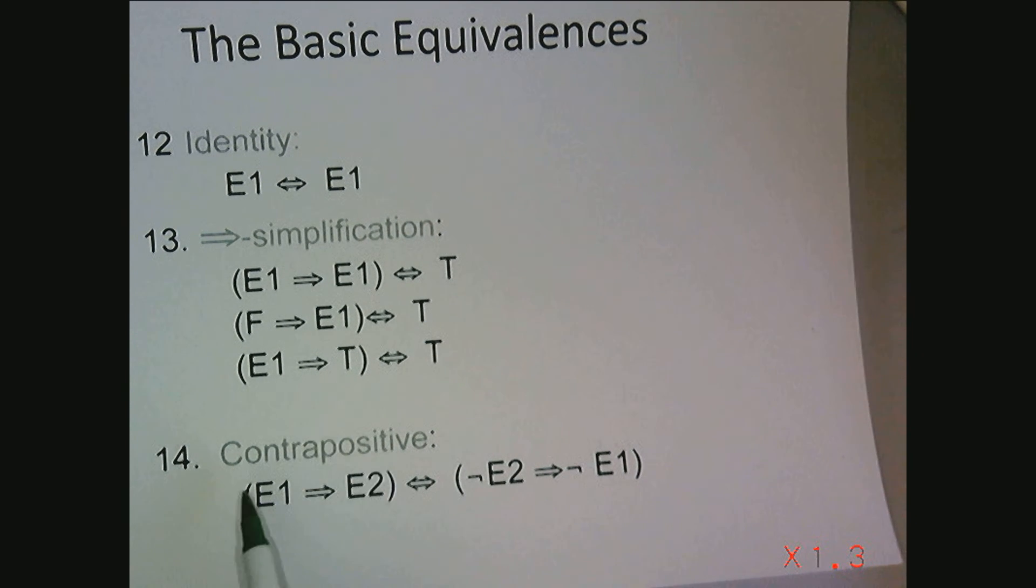Contrapositive, the statement that tells us that E1 implying E2 is equivalent to not E2 implying not E1, is something that is the example that I used in a previous video to show that we could use truth tables to prove tautologies.